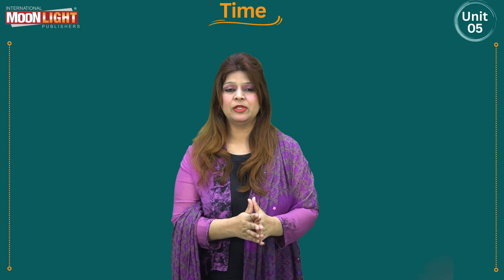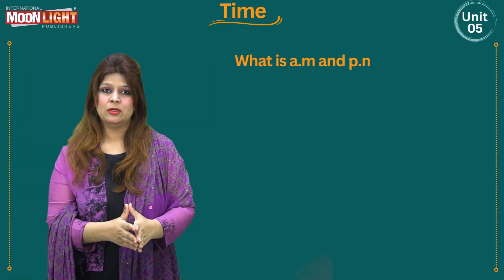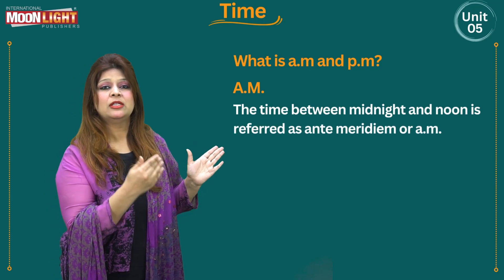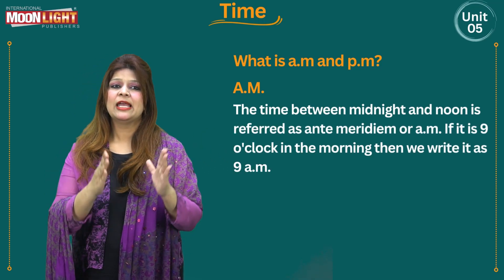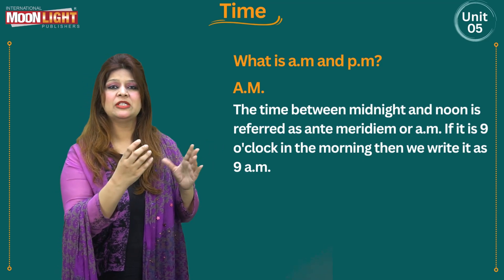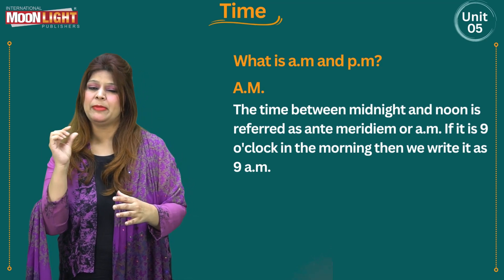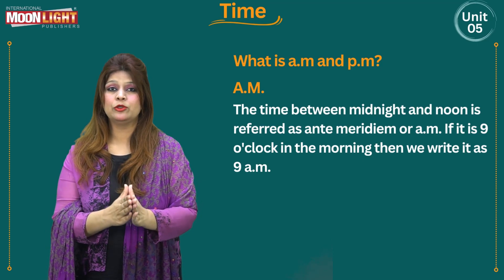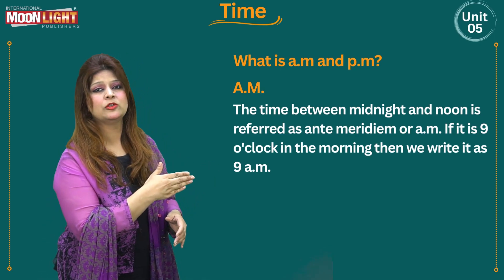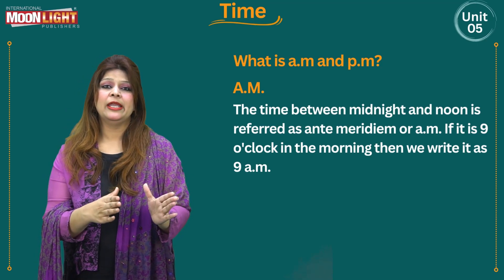In the statement there was AM and also PM. So what is AM and PM? As I told you in my previous lecture for Class 2, AM is the time between midnight and noon, referred to as ante meridiem — 'a' stands for ante and 'm' stands for meridiem — written as a.m. We denote it with this abbreviation.